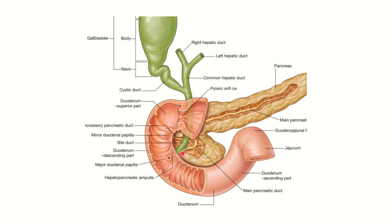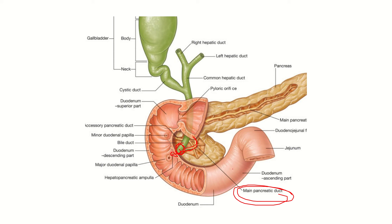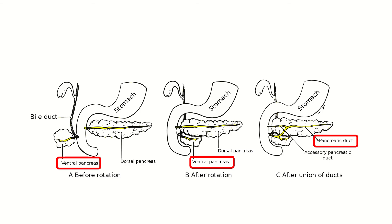Looking at the picture, we can see the pancreas and here is the main pancreatic duct. The main pancreatic duct unites with the bile duct and forms the ampulla of Vater, which then drains into the second part of the duodenum. We need to find the embryological origin of this duct.